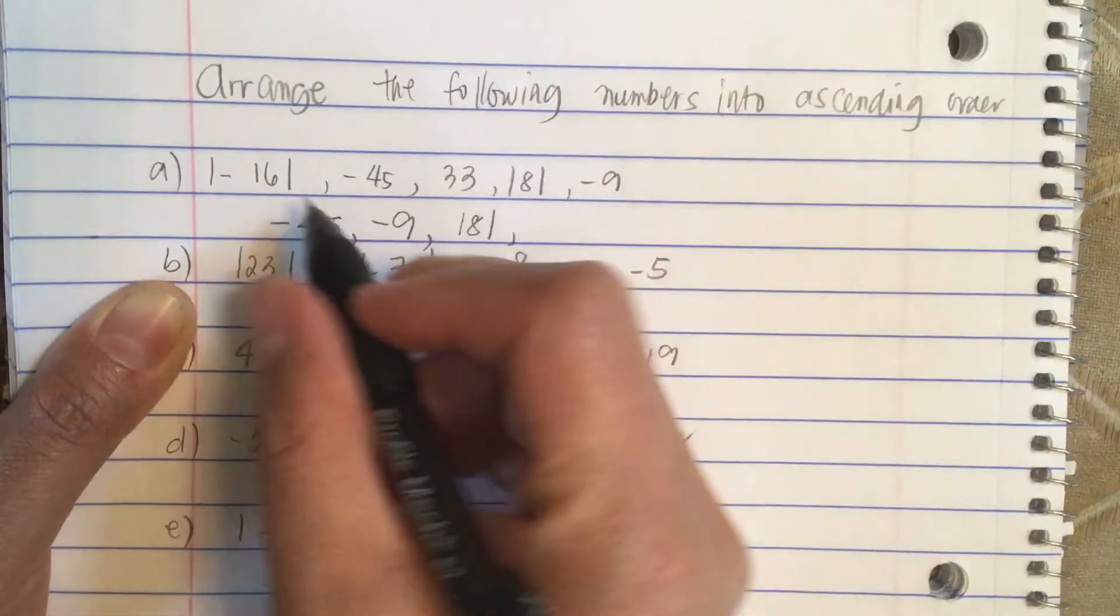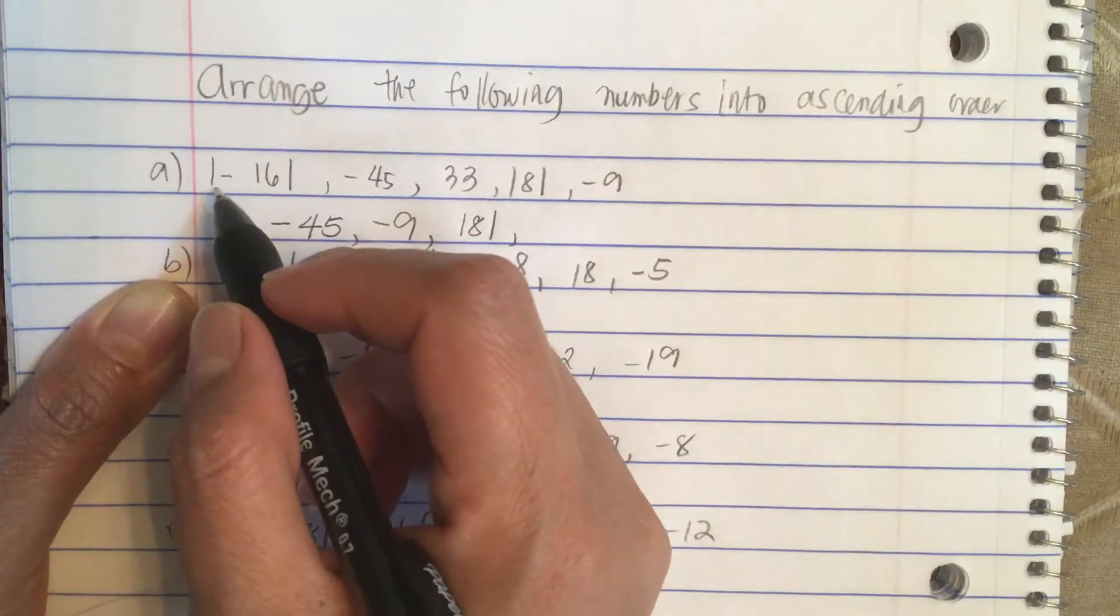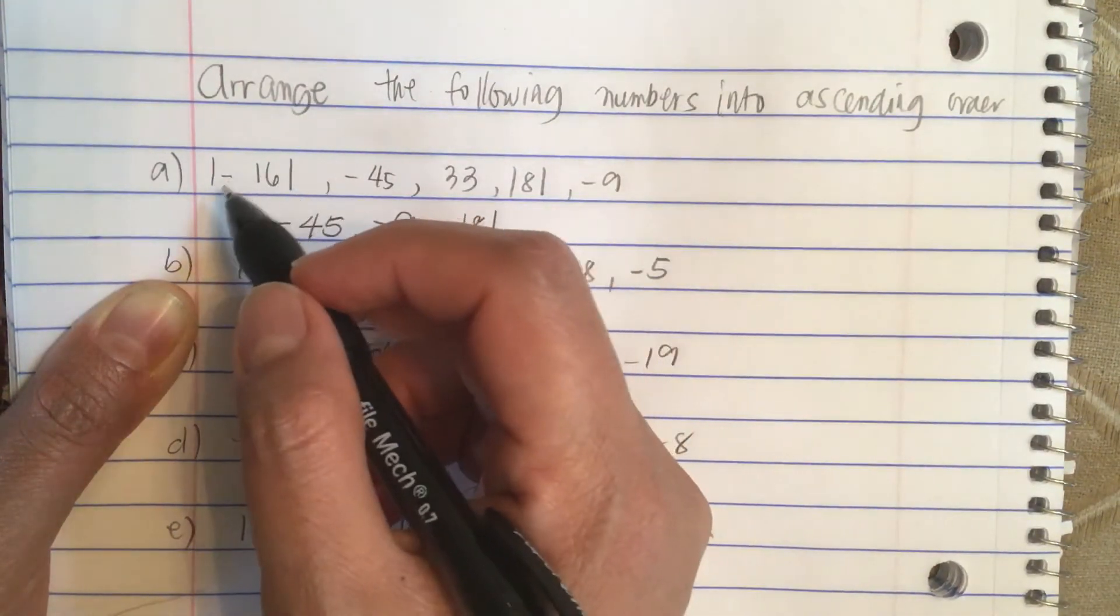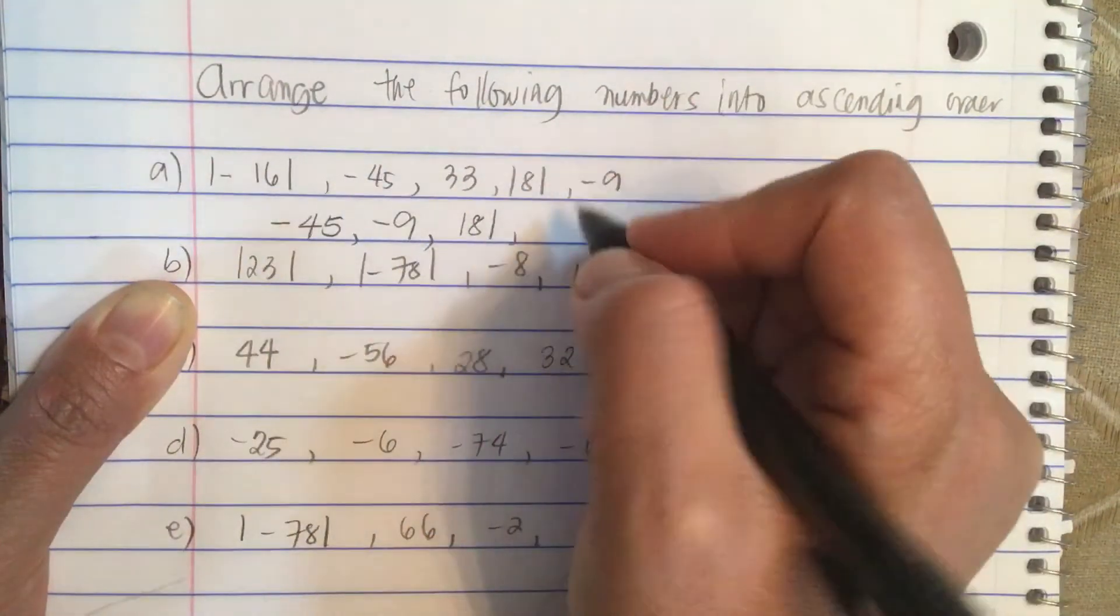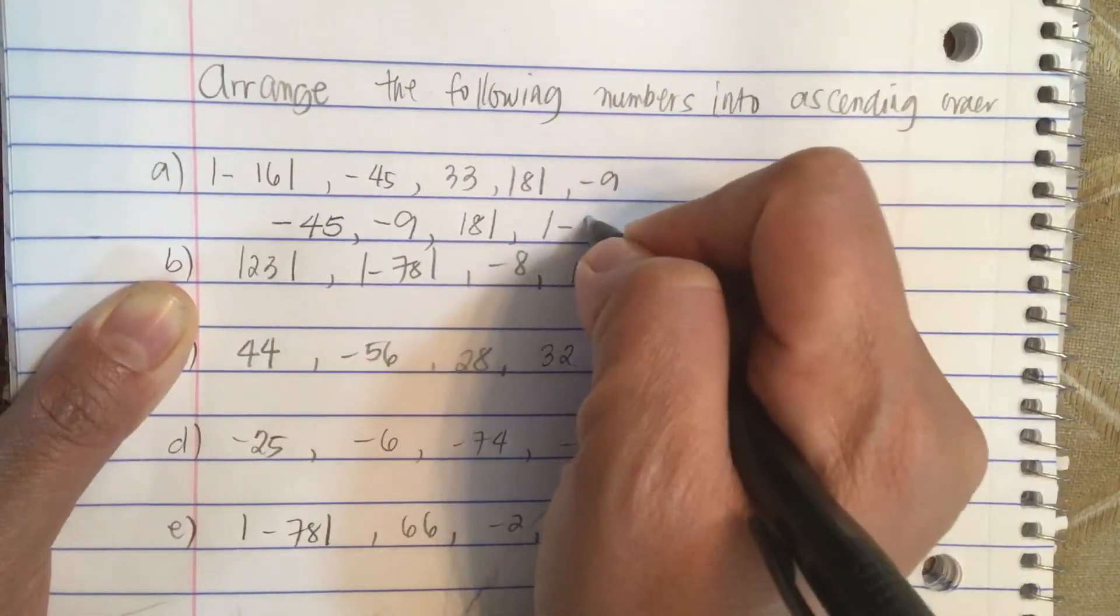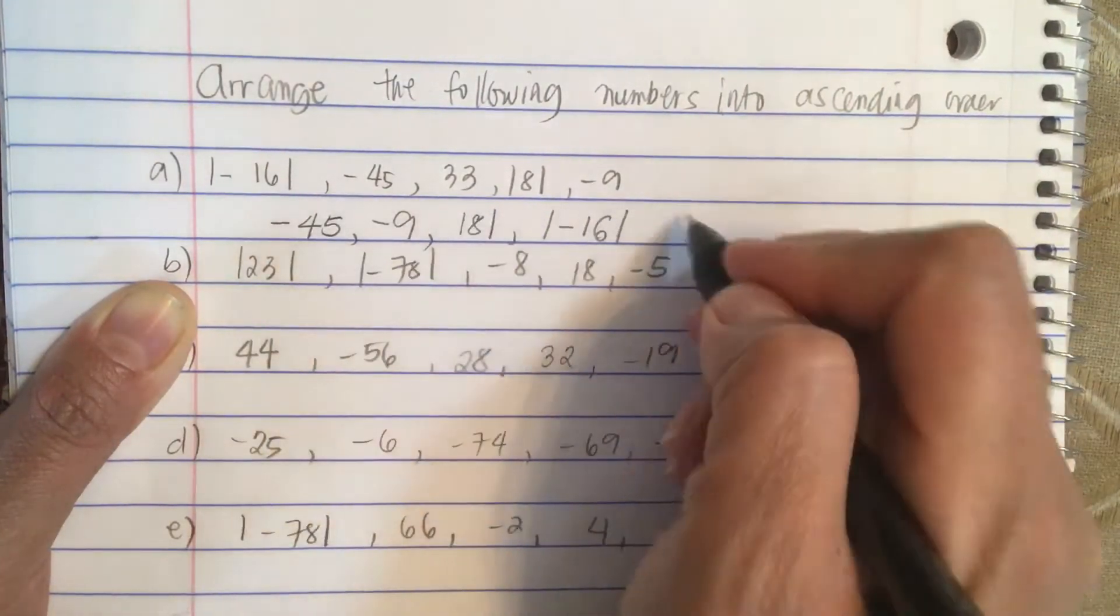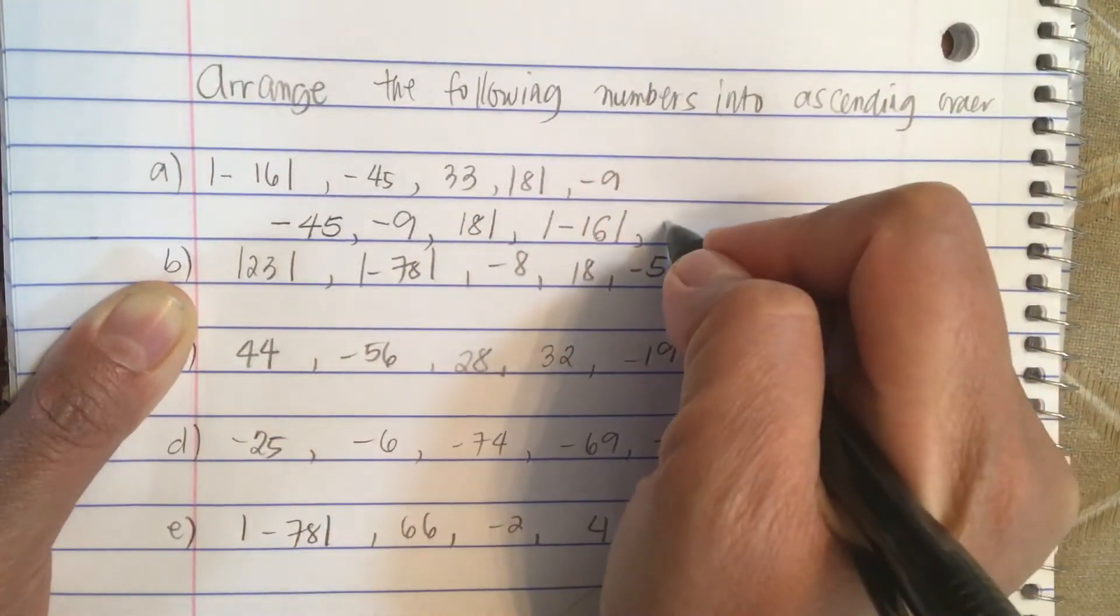And then we have an absolute value of minus 16. Absolute value means ignore the sign or disregard the sign, so it's like a positive 16. And then the last one is 33.